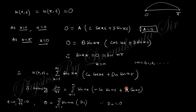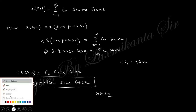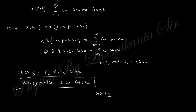Taking the time derivative of the solution gives the velocity expression. Since the initial velocity is zero at t = 0, the coefficient d_n must equal zero. The solution reduces to a sum of terms with only cosine in time. Using the initial deflection condition and applying the identity sin C + sin D = 2 sin((C+D)/2) cos((C-D)/2), we compare and find n = 2 and C_2 = 4 cos(n). Substituting these values, only n = 2 is valid, giving the final closed-form solution.